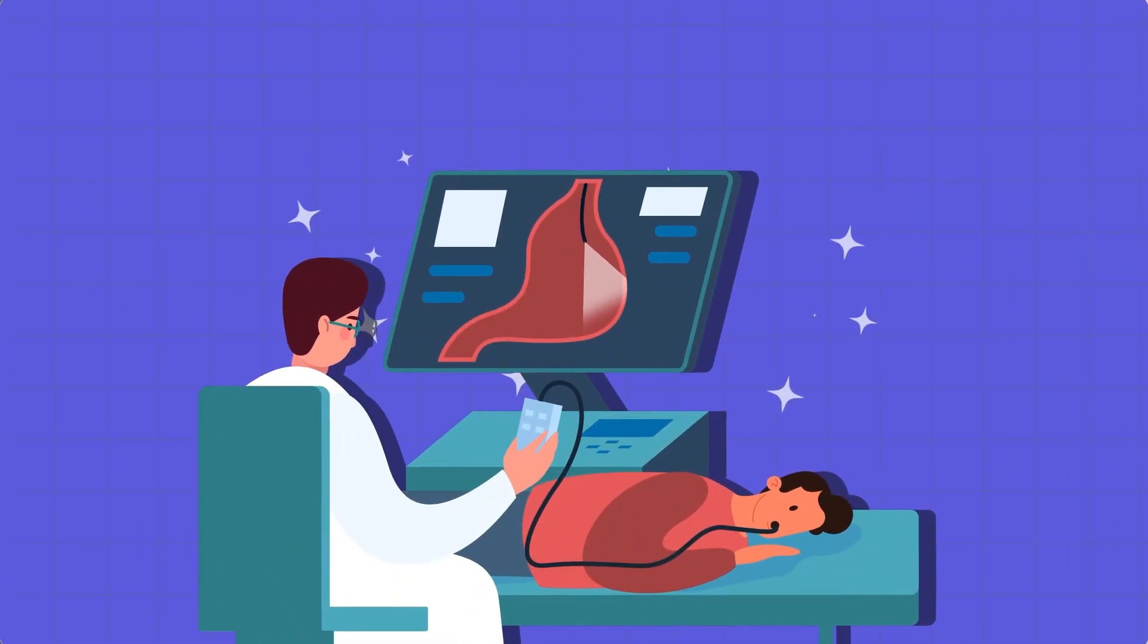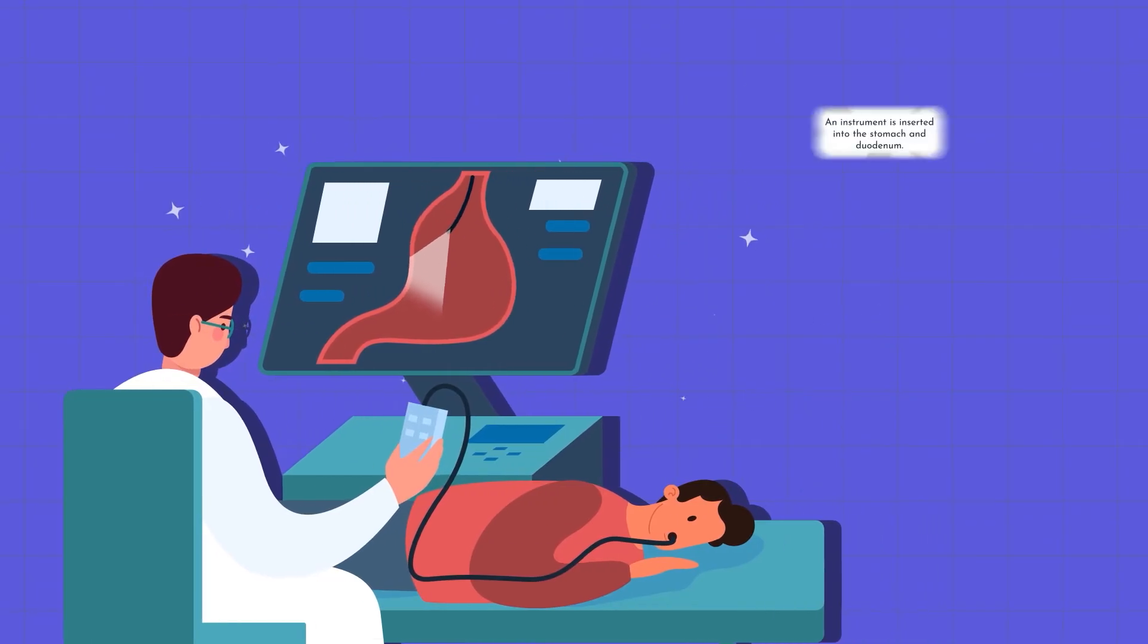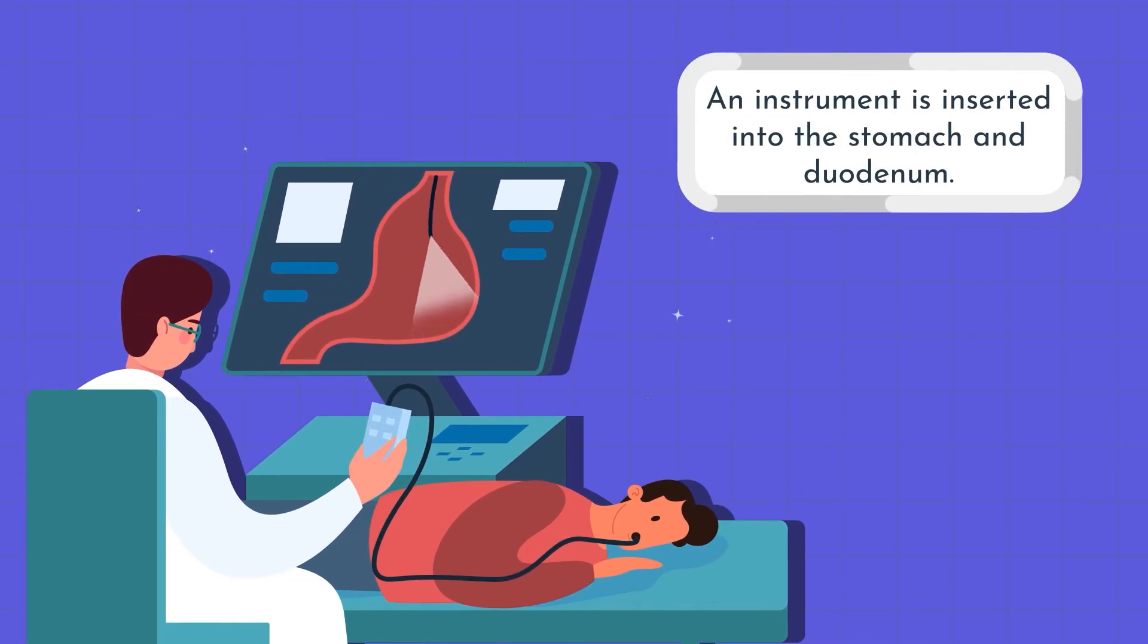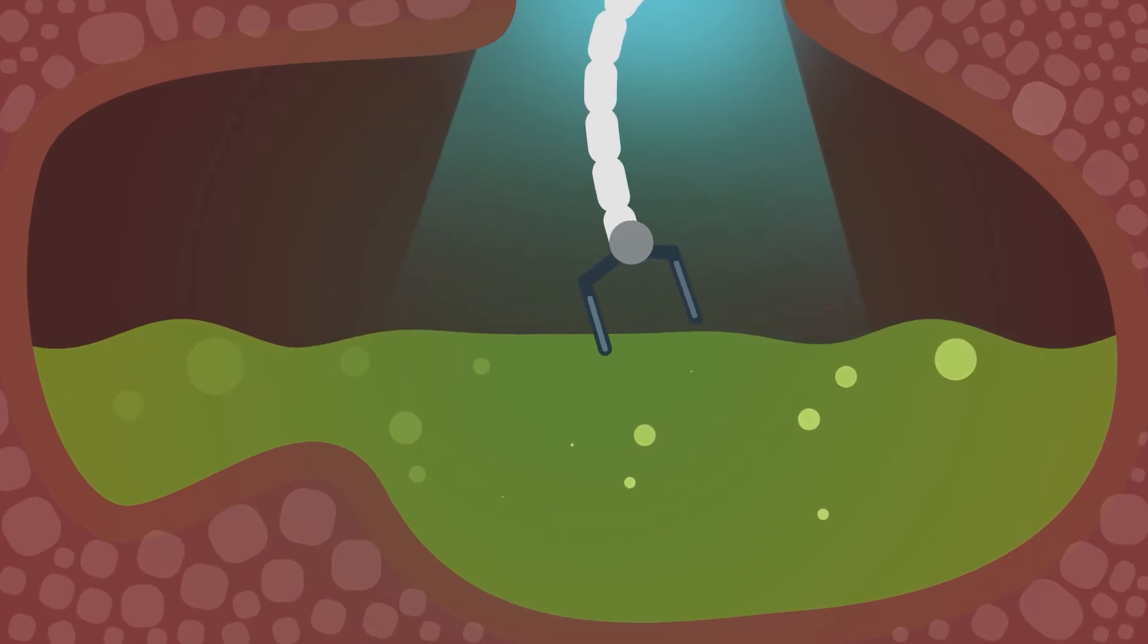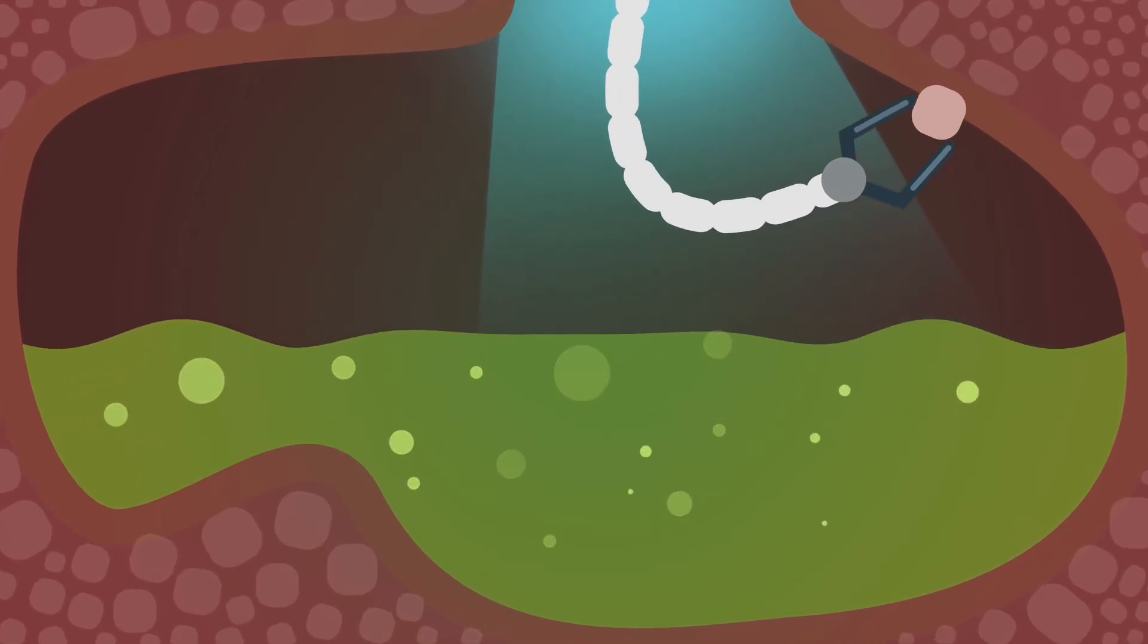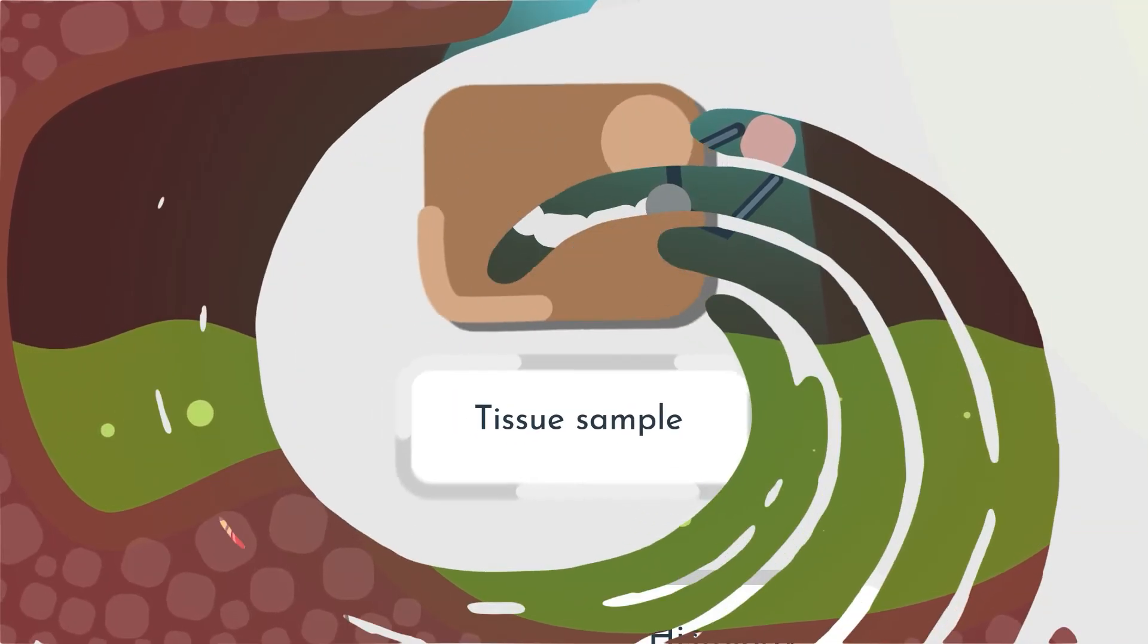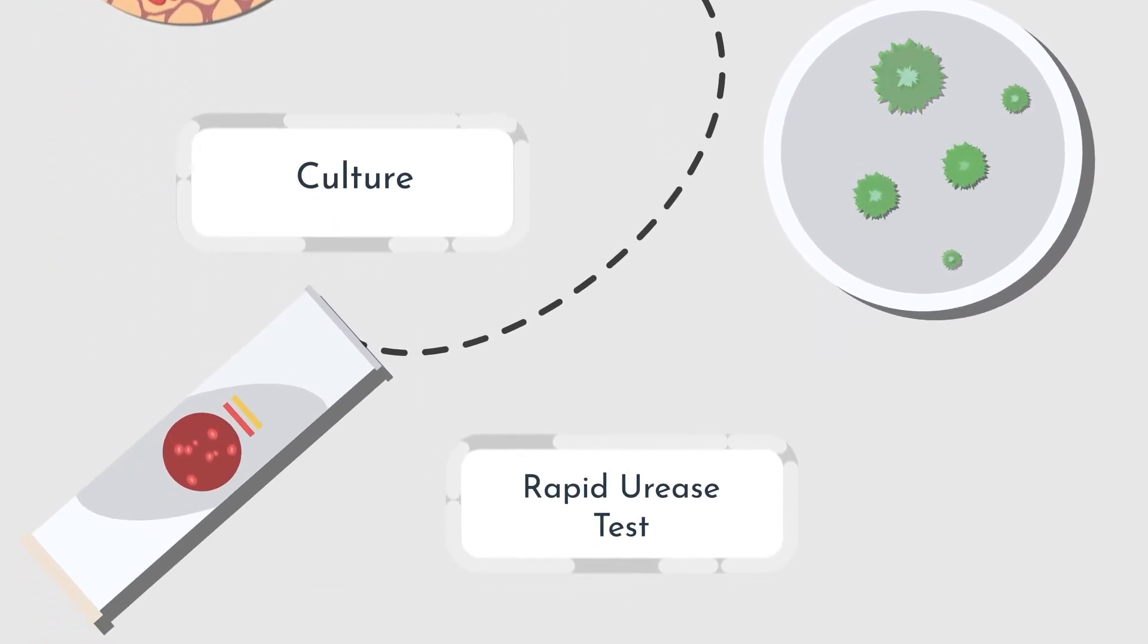Invasive tests involve endoscopy with biopsy. During this procedure, an instrument is inserted into the stomach and duodenum to visualize the gastrointestinal lining, and tissue samples are taken. These samples are then tested for H. pylori using various methods like histology, culture, or rapid urease test.